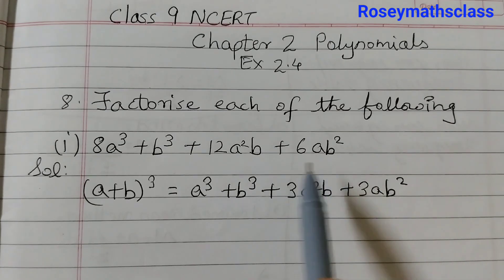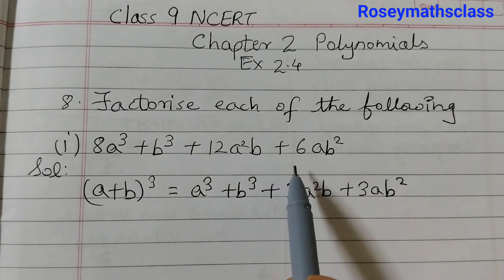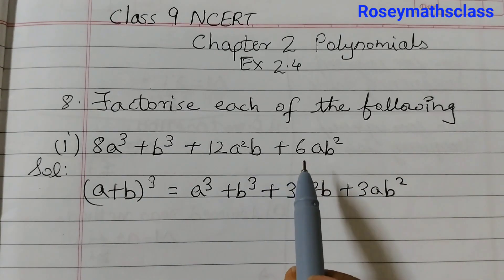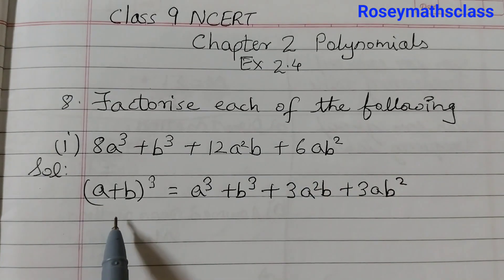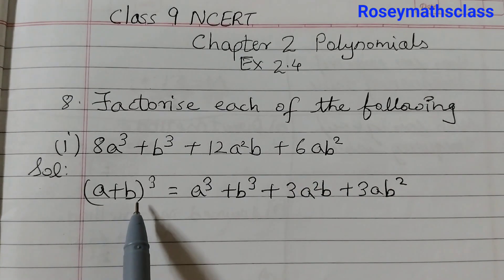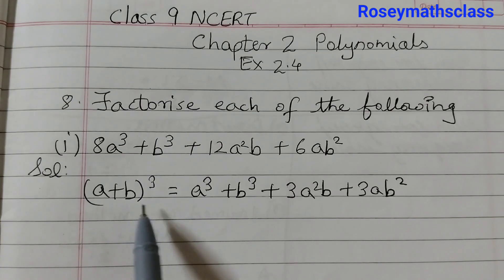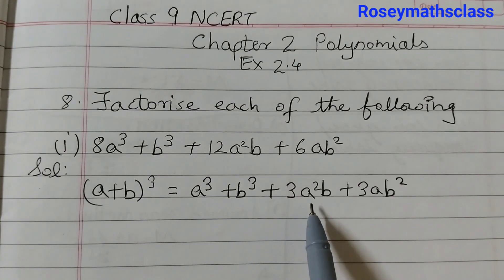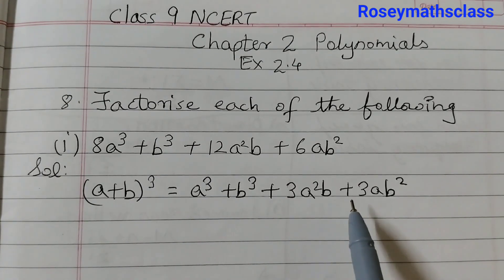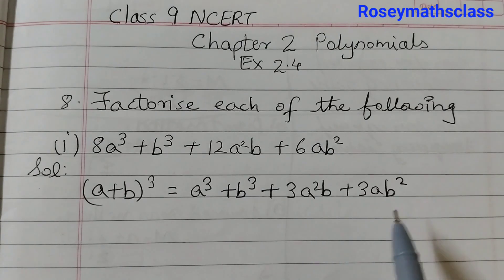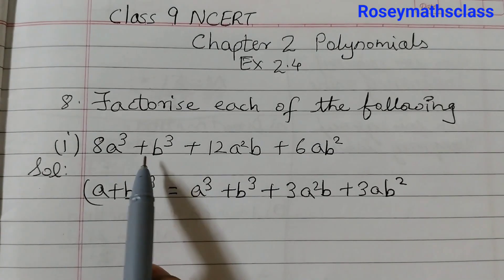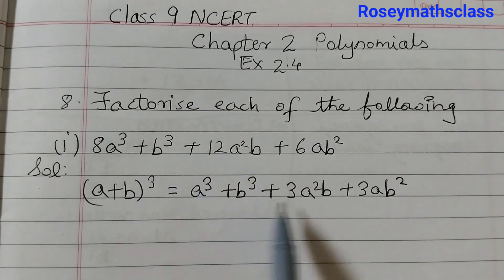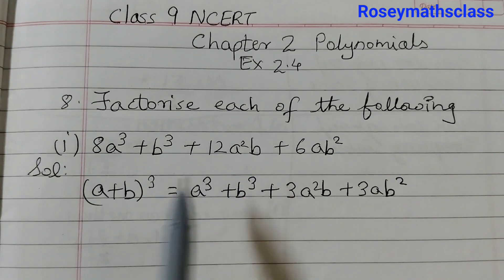This is given in expanded form and we need to find the factors. The identity we need to use is: (a + b)³ = a³ + b³ + 3a²b + 3ab². This expanded form matches with this identity and we need to express it in factored form.